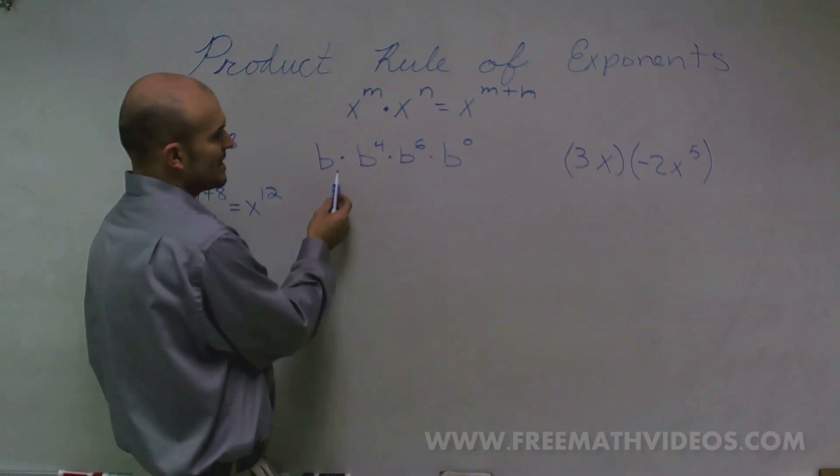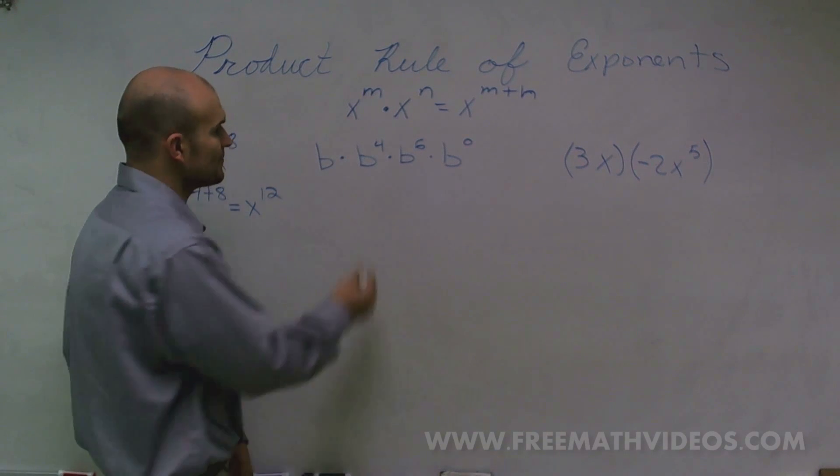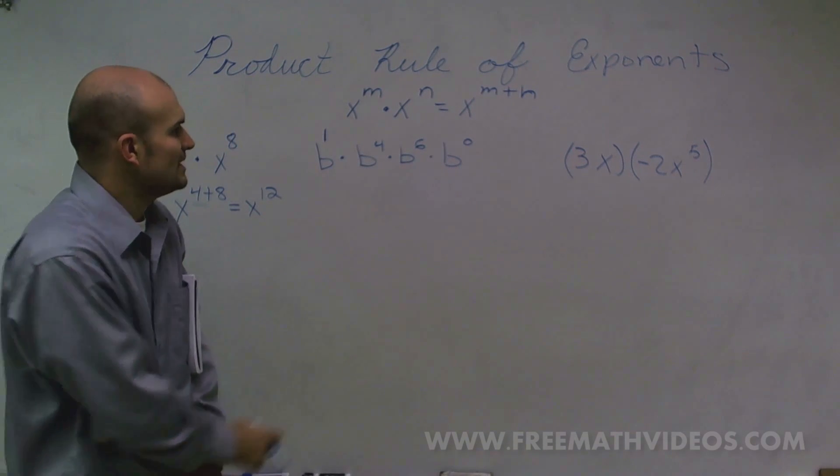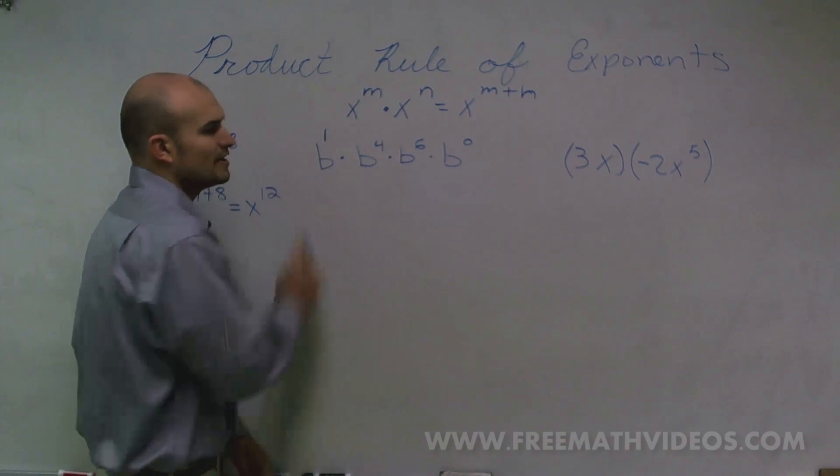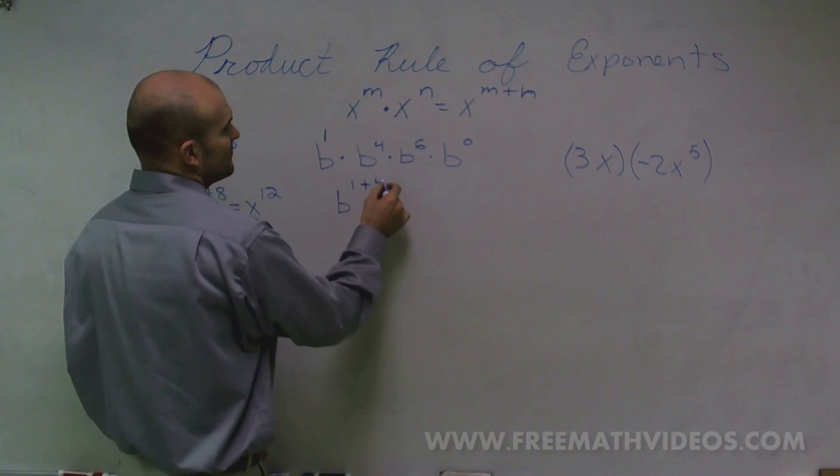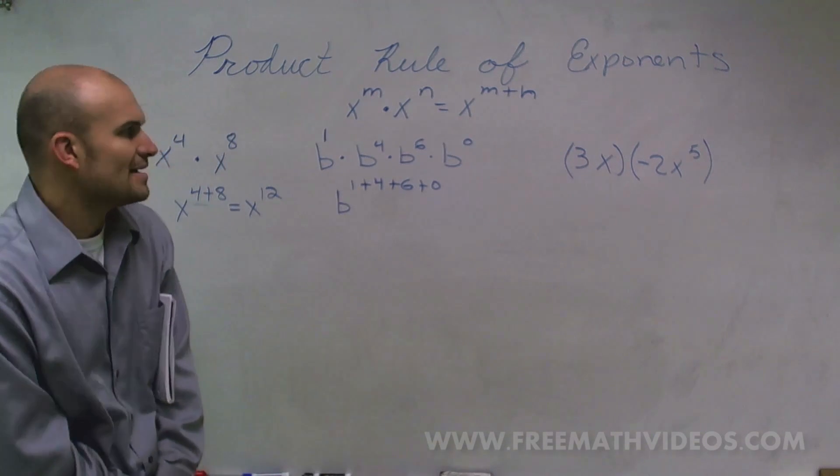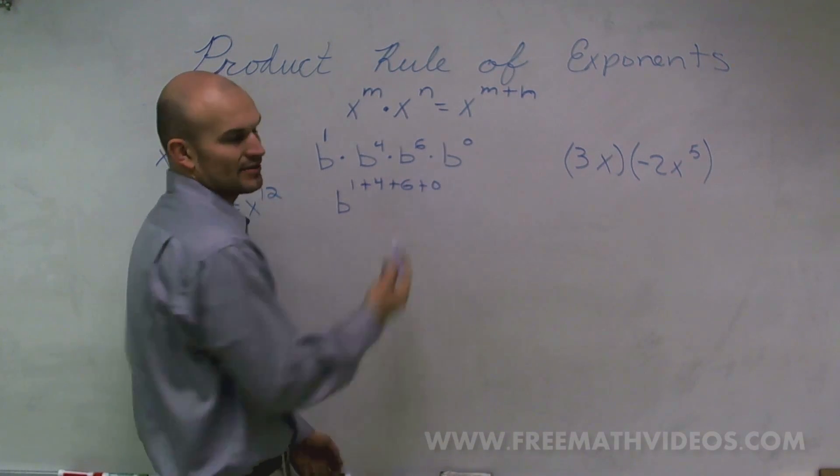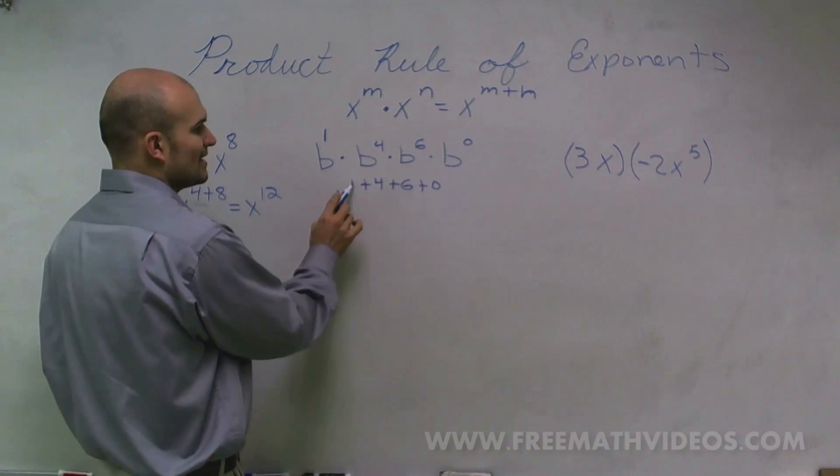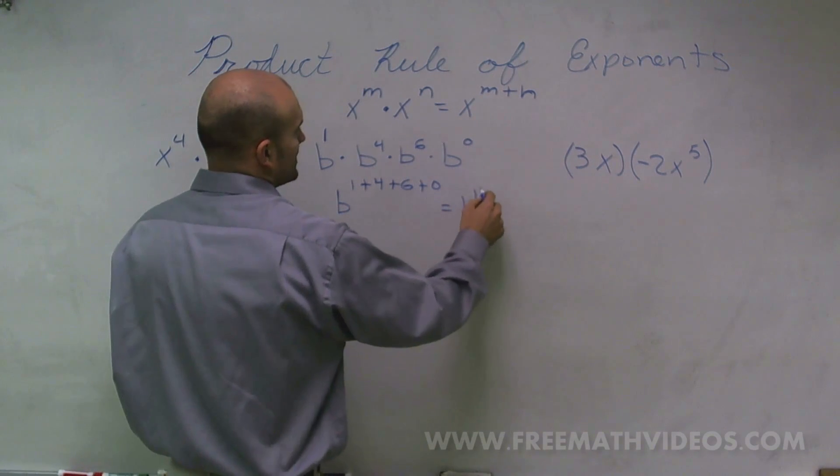Here I notice that all my bases are exactly the same. b times b to the 4th times b to the 6th times b to the 0. I don't know what my exponent is. Well, remember, b raised to the first power is obviously going to give you b, so therefore I can substitute in a 1 to help me solve this problem. So now I can do b to the 1st plus 4 plus 6, and then you can add in 0. And obviously you know that b to the 0 power, by adding 0, that's not going to really change it. We finalize this as 1 plus 4 plus 6 equals b to the 11th power.